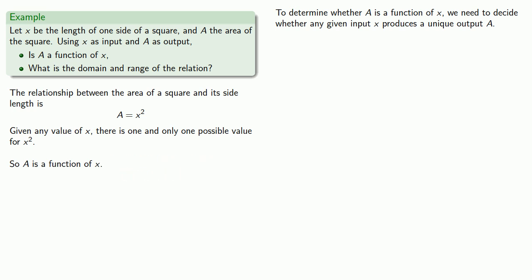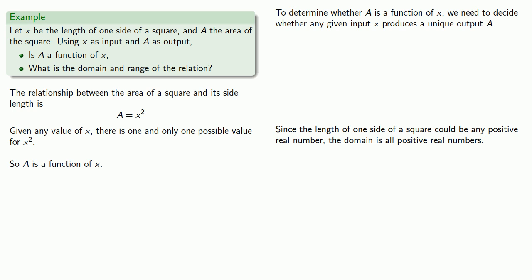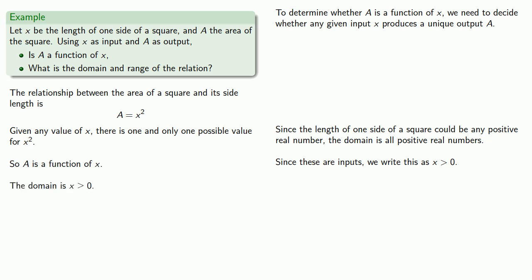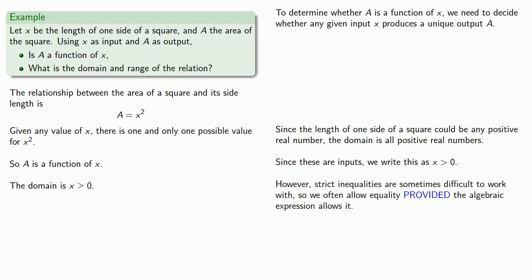How about the domain and range? Since the length of one side of a square could be any positive real number, the domain is all positive real numbers. Since these are inputs, we write this as x greater than 0. Now, strict inequalities are sometimes difficult to work with, so we often allow equality provided the algebraic expression allows it. Since we can find x squared even if x equals 0, we allow our domain to be x greater than or equal to 0.